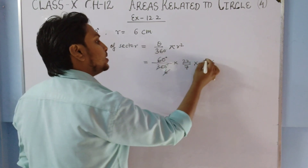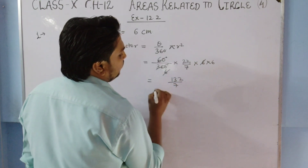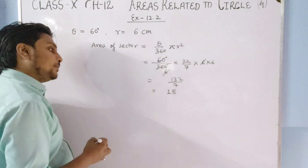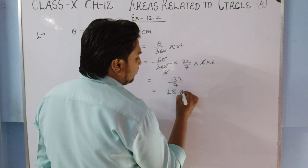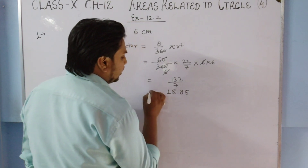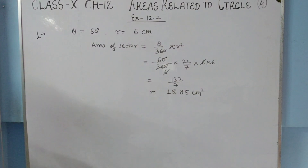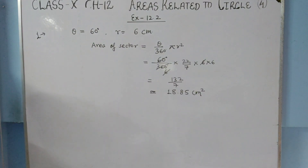Solving: 60 cancels with 360 six times, and 6 × 6 cancels down, giving 132/7, which is approximately 18.85 cm². You can leave the answer as 132/7 cm² as well. This was the first question of Exercise 12.2 — pause the video and note it down.